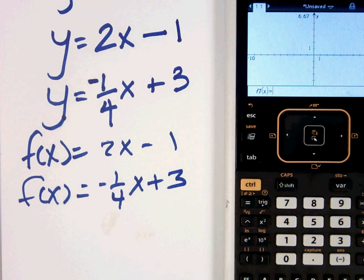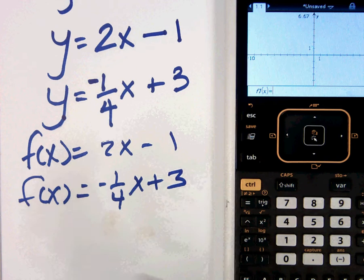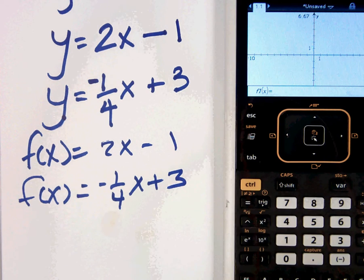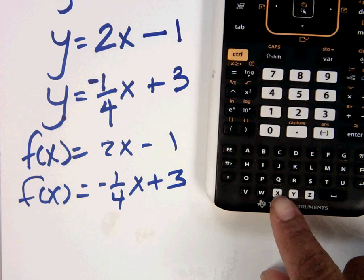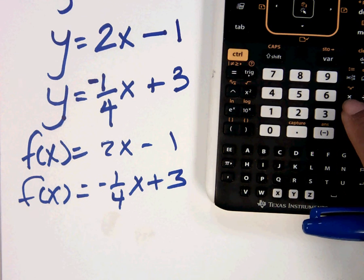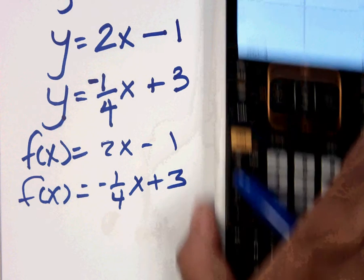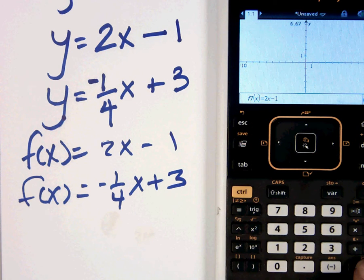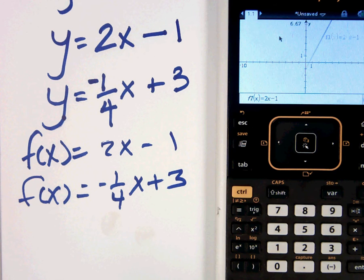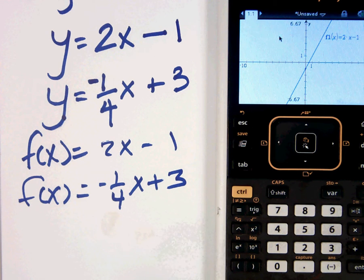Here we go. Type it in. So I'm going to type in 2x. Make sure you get your x from down here. Don't use that. That's multiplication. Okay, 2x minus 1. Press Enter. It graphs it for you.